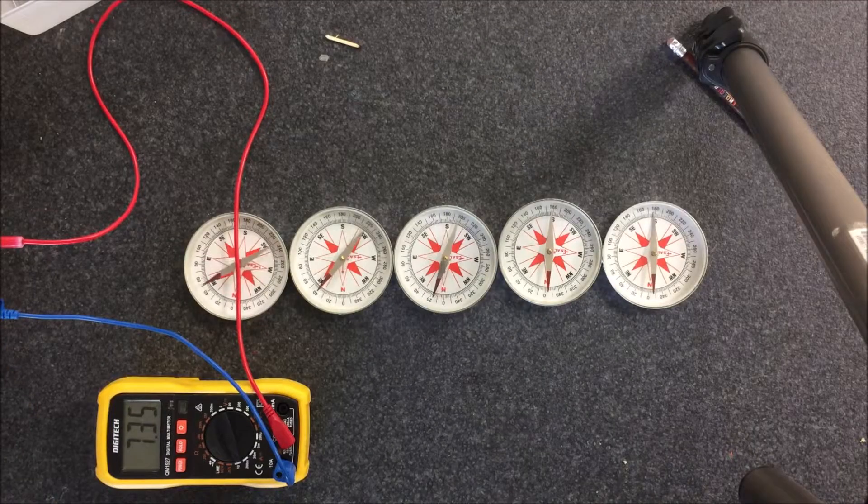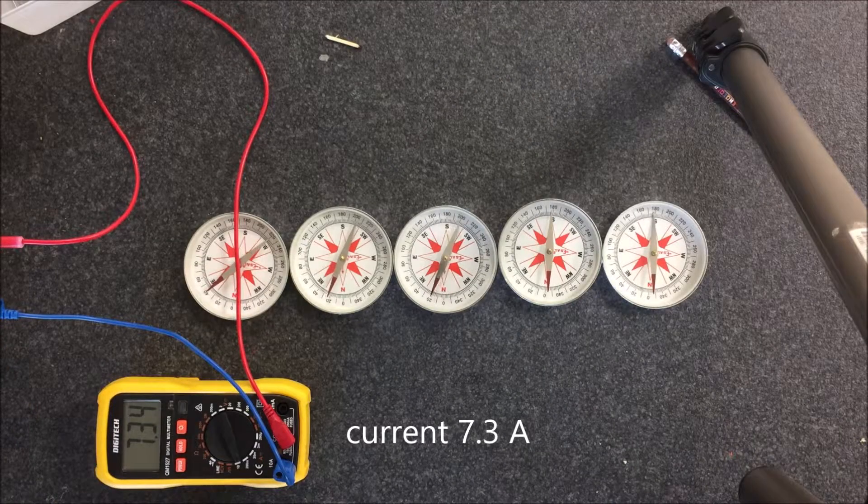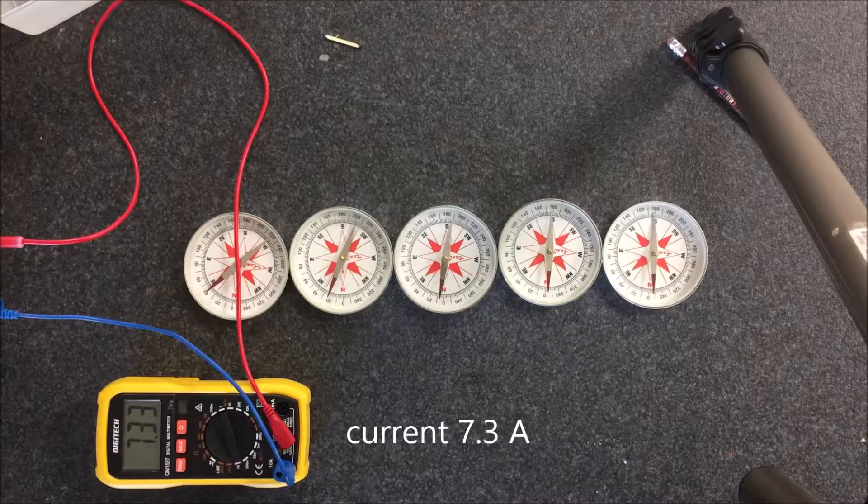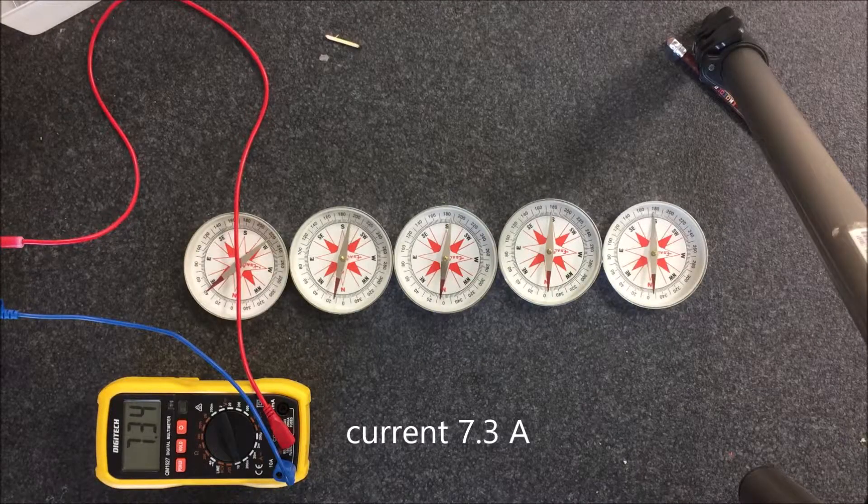So here it is here with an ammeter, and it reads about 7.3 amps, and you can read off the deflections for each of the different compasses.